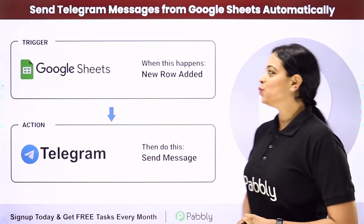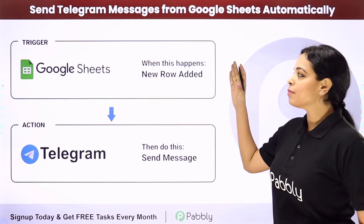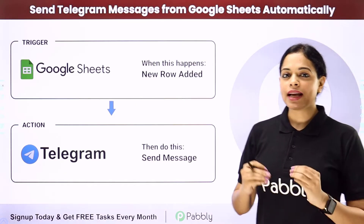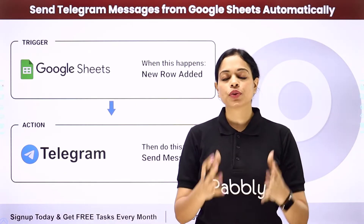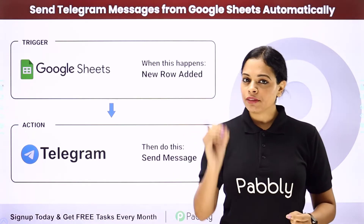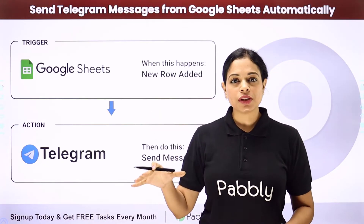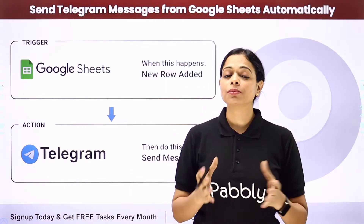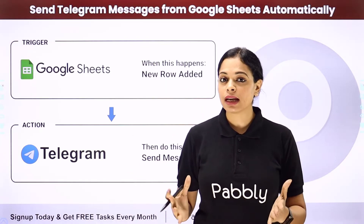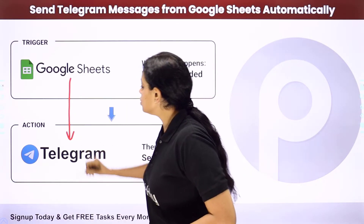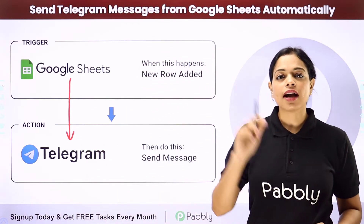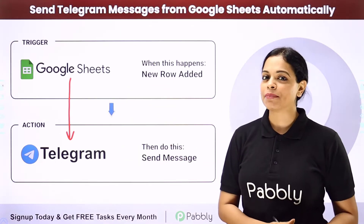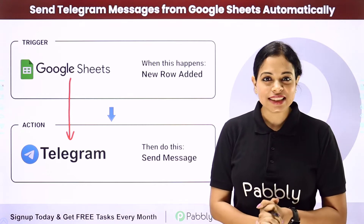In this video we are going to understand how to send Telegram messages from Google Sheets automatically. Let's say that somebody has shared feedback on your software — every time details are added in your Google Sheet, you want that information to be shared with your team on Telegram. For this, we will be integrating these two applications using Pably Connect. Our trigger application will be Google Sheets and our action application will be Telegram.